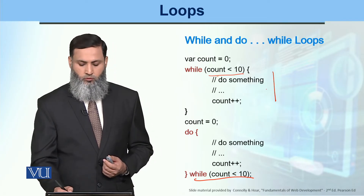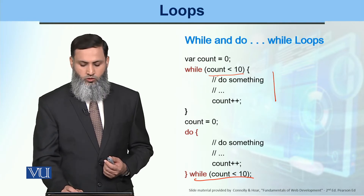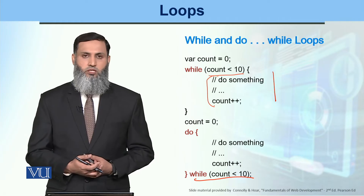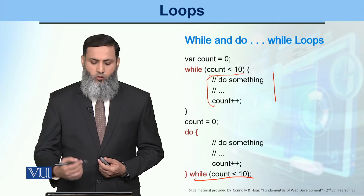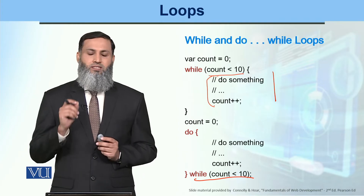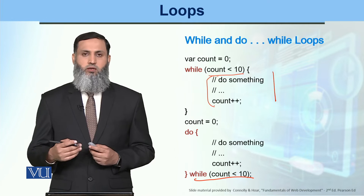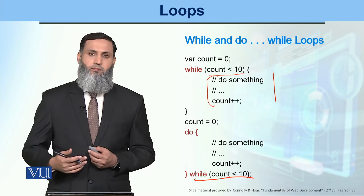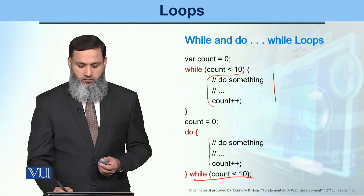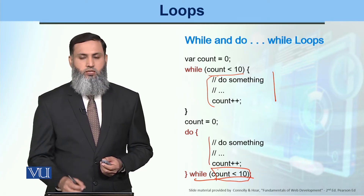When there is a possibility that the condition is false from the start, that block will not be executed in a while loop. With do-while, when you want to execute the block at least once and then check the condition — you execute first, then check if the condition is true to repeat.